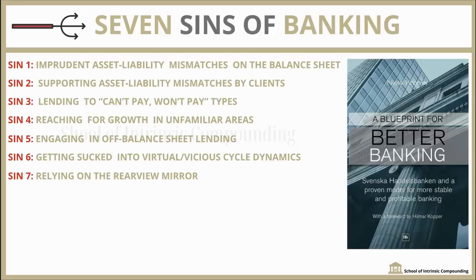Going to the next lesson — the Seven Sins of Banking. A book called A Blueprint for Better Banking was written by Niels Kroner. This book talks about the seven sins that arise in banking. The first sin is imprudent asset-liability mismatches on the balance sheet. The second is supporting asset-liability mismatches by clients. The third sin is lending to can't-pay, won't-pay types. The fourth sin is reaching for growth in unfamiliar areas. The fifth sin is engaging in off-balance-sheet lending. The sixth sin is getting sucked into virtual and vicious cycle dynamics. The seventh sin is relying on the rear-view mirror.